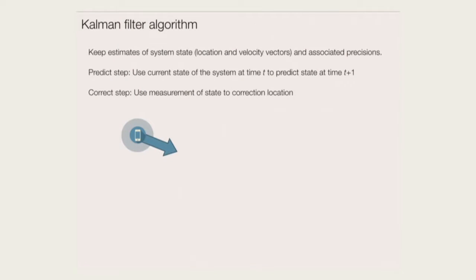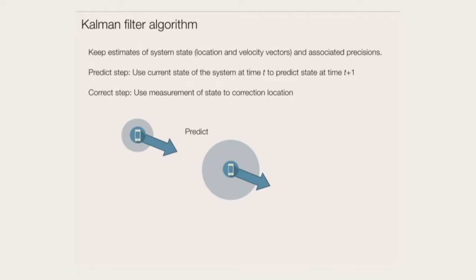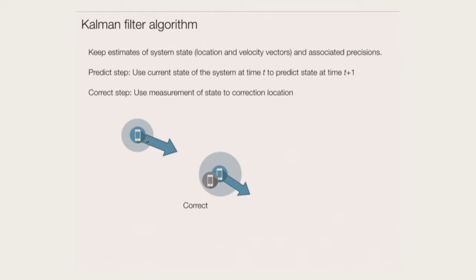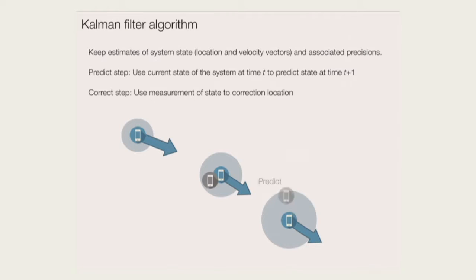The algorithm is really simple and beautiful. There's a predict step: using the current estimated location and velocity, you project forward where the phone will be after some time. Then you update that with a GPS ping, which corrects it. The gray circles represent how much uncertainty we have — uncertainty increases when you project forward, but then when we get the GPS ping, uncertainty shrinks. So the filter basically gives an idea at each small step in time of where we think the phone is.